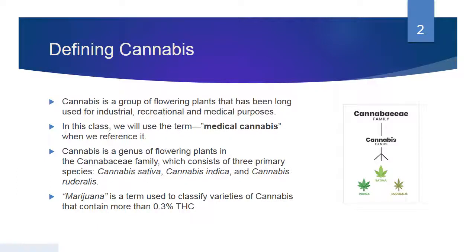Before we get into the medical aspect, I just want to define some of the elements and the words that we're going to be using. Cannabis is a group of flowering plants that has long been used for industrial, recreational and medical purposes. In this class, we will use the term medical cannabis when we reference it. Cannabis is a genus of flowering plants in the cannabaceae family, which consists of three primary species: Cannabis sativa, Cannabis indica, and Cannabis ruderalis.